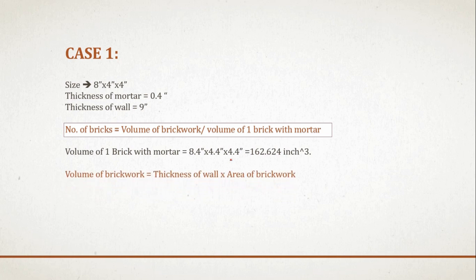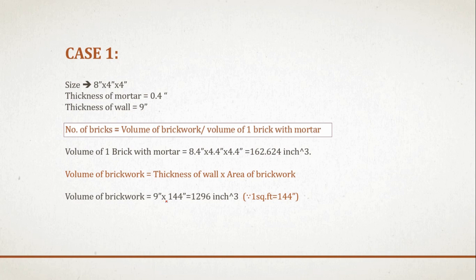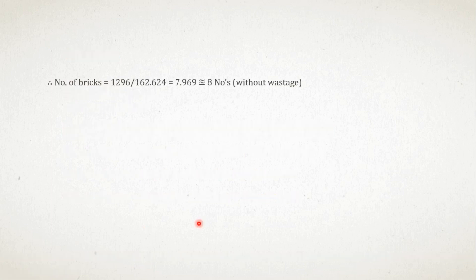Volume of brickwork equals thickness of wall multiplied by area. Since one square foot equals 144 square inches, volume of brickwork equals 9 inch multiplied by 144 square inches, which gives 1296 cubic inches. Therefore, number of bricks equals 1296 divided by 162.624, which gives a value of 7.969, approximately equal to 8 numbers.